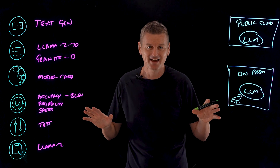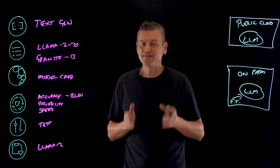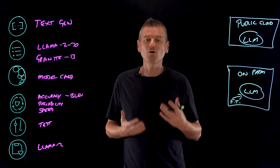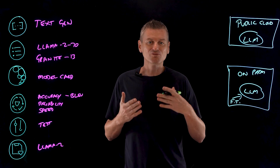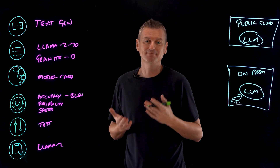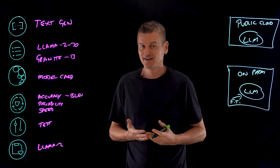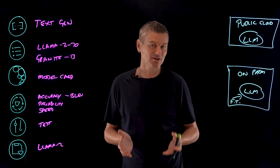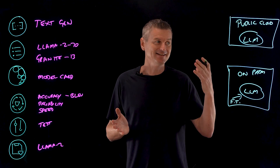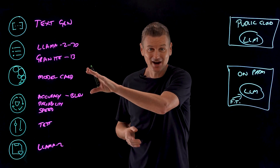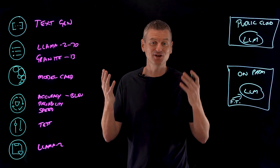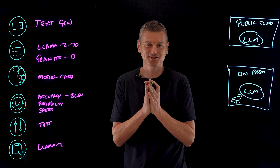Everything we've discussed is tied to a specific use case, but it's quite likely that any given organization will have multiple use cases. As we run through this AI model selection framework, we might find that each use case is better suited to a different foundation model — that's called a multi-model approach. Not all AI models are the same and neither are your use cases, and this framework might be just what you need to pair the models and use cases together to find a winning combination of both.